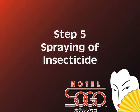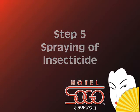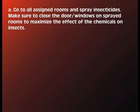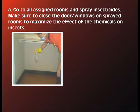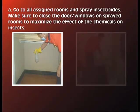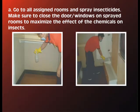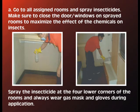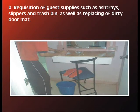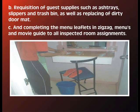Step 5: Spraying of insecticide. Go to all assigned rooms and spray insecticides. Make sure to close the door and windows on sprayed rooms to maximize the effect of the chemicals on insects. Spray the insecticide at the four lower corners of the rooms; always wear a gas mask and gloves during application. Requisition of guest supplies such as ashtrays, slippers, and trash bins, as well as replacing dirty doormats. Complete the manual leaflets in zigzag, menus, and movie guides in all inspected room assignments.